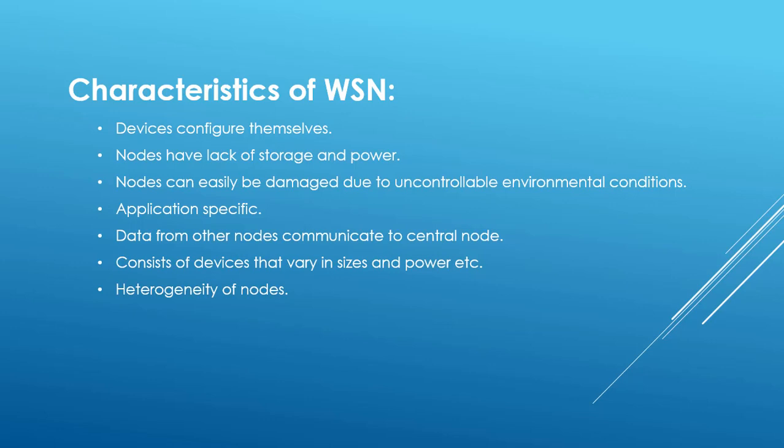Wireless sensor networks are application-specific, as they are specially designed for a particular purpose. Data from all nodes communicates to the central node — every node sends its data there. The network consists of devices that vary in size and power. There is also heterogeneity of nodes, meaning every node is of a different type; it is rare to have identical nodes in a wireless sensor network.